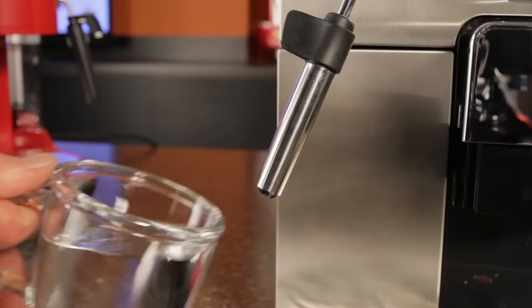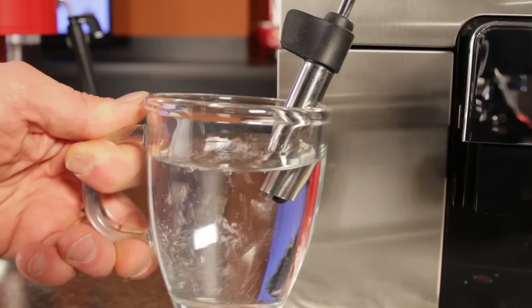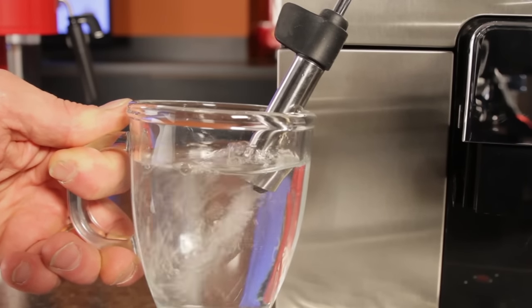Dirty and improperly assembled steam wands are two huge reasons for poor frothing performance. An easy way to make sure your wand is performing properly is to steam some water in a clear glass. So, with your machine ready to steam, put the tip of the wand just below the surface of the water and turn on the steam.